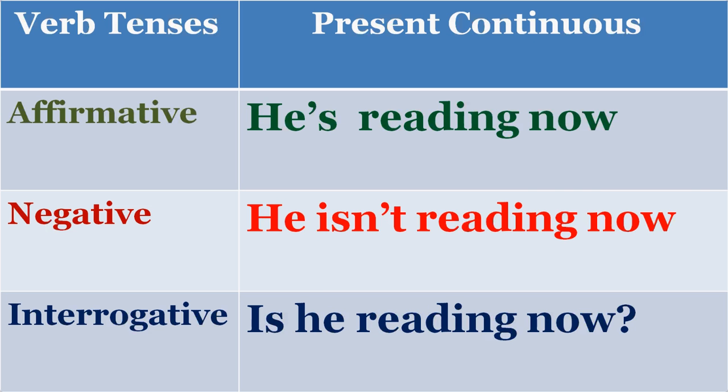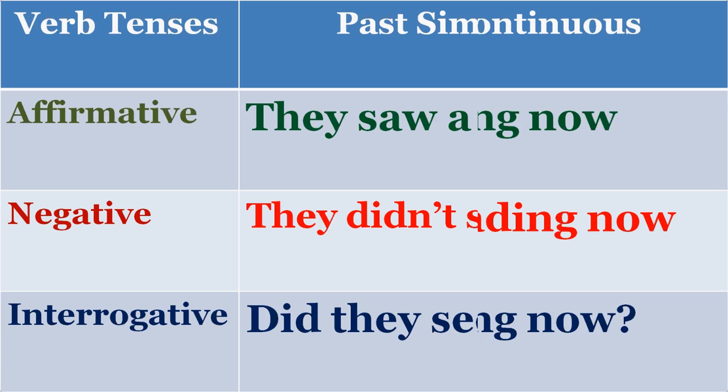Let's practice the same thing for every tense. In present continuous, something is happening continuously at present. Affirmative: 'He is reading now.' Negative: 'He isn't reading now' or 'He's not reading now.' Interrogative: 'Is he reading now?' The reading is a continuous present — it is happening now and is continuous. That's the basic difference.